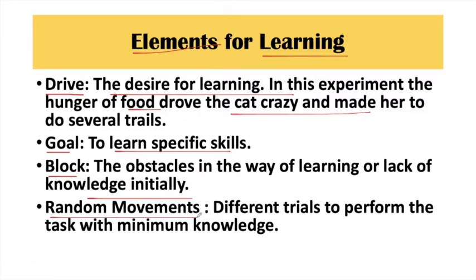The next element is random movements. We give many random responses to a task or problem to solve it. For example, if we are given a math problem in class and told to solve it, we try to solve it using different methods. When a child is learning with minimum knowledge, they have many random trials and eventually reach an accurate response.